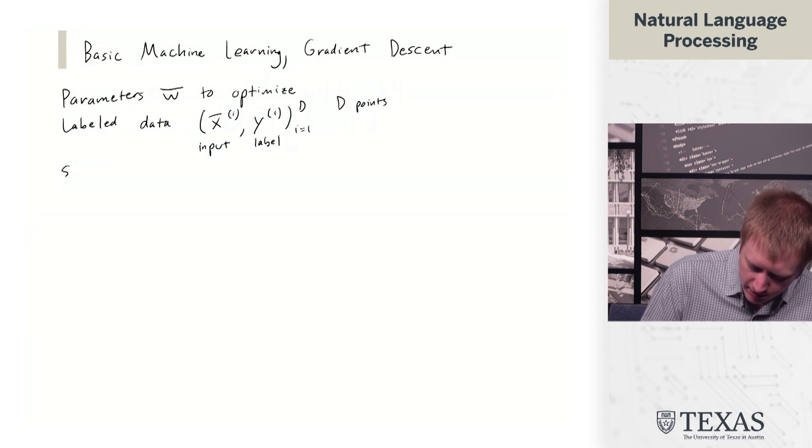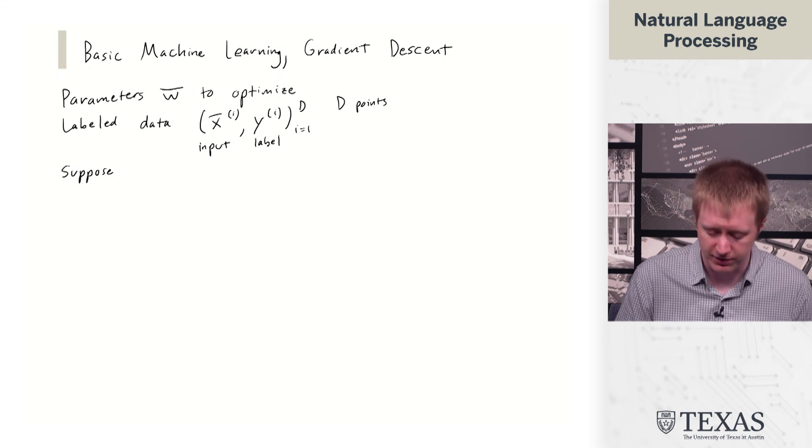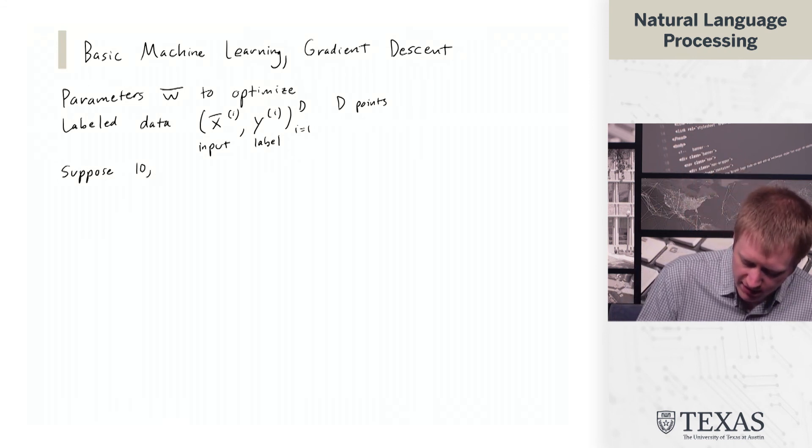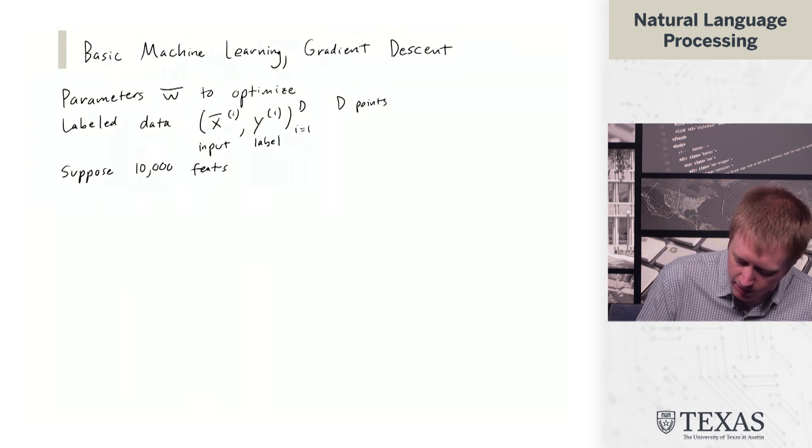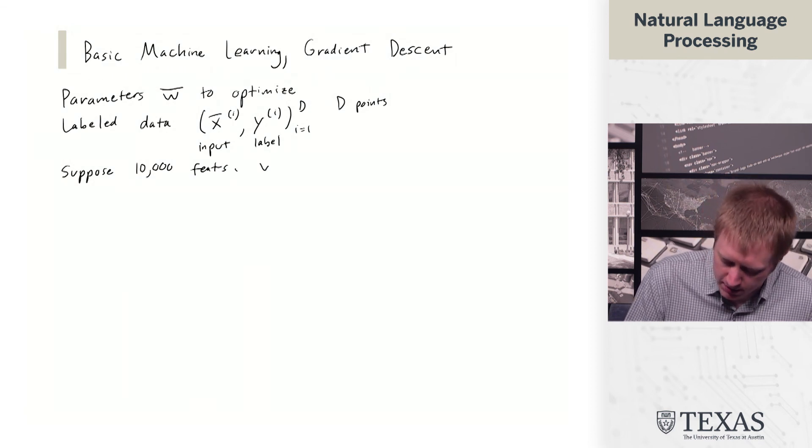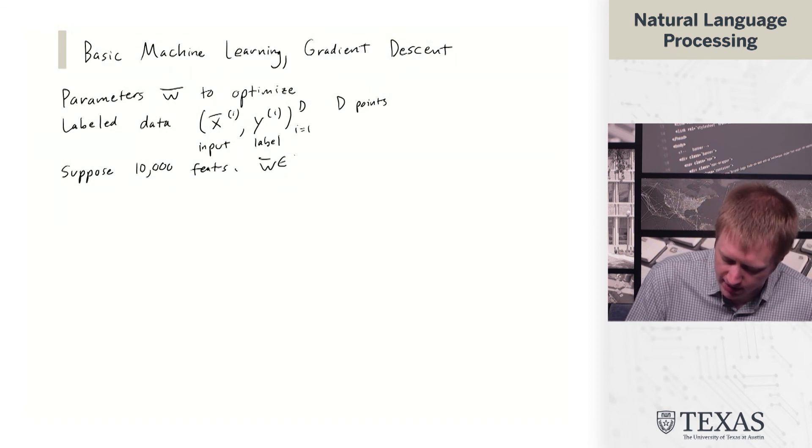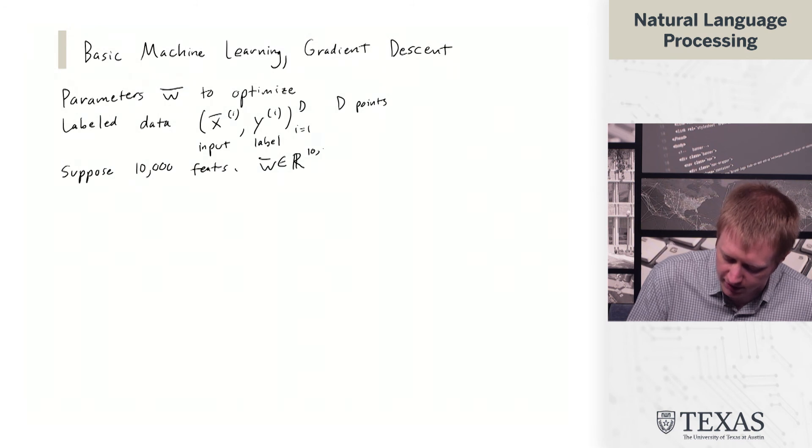So suppose we're doing classification with 10,000 features. And so W is a vector in R to the 10,000.